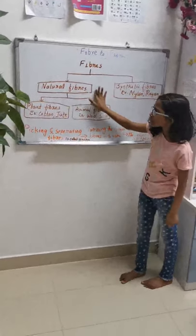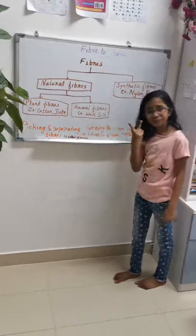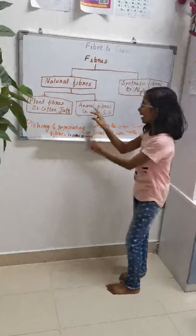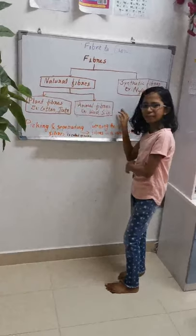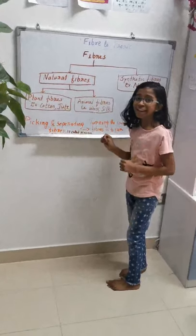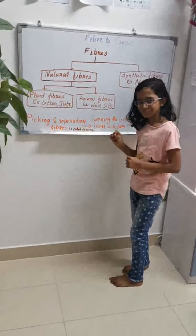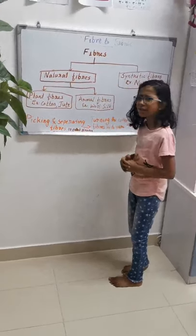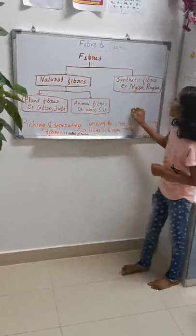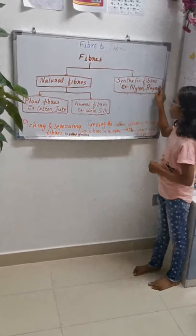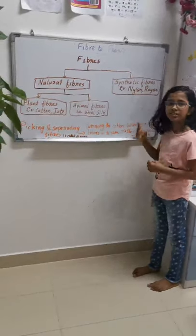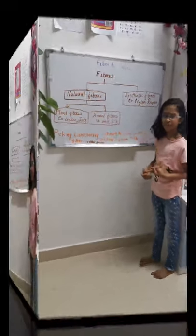Natural fibers are separated into two parts: plant fiber and animal fiber. Some examples of plant fiber are cotton and jute. Some examples of animal fiber are wool and silk. Synthetic fibers have two examples: nylon and rayon.